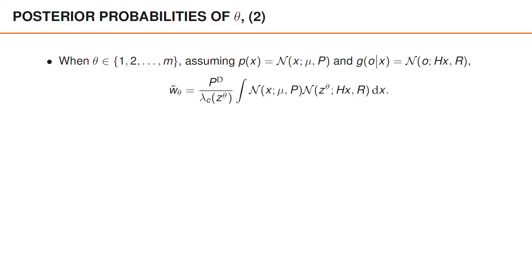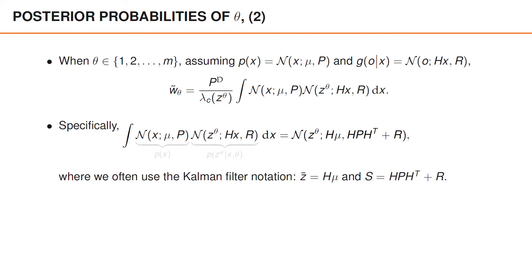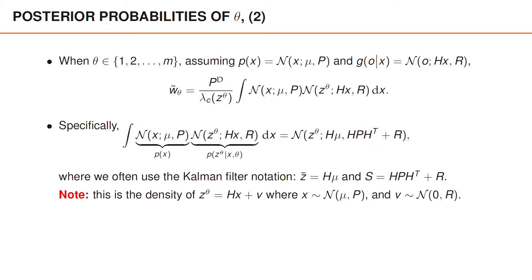This integral is the tricky part, but it actually has a known and simple expression. It turns out that it is identical to a Gaussian density with mean Hmu and covariance HPH-transpose plus R, evaluated at z-data. To remember this result, it is helpful to write down the densities as algebraic equations. If z-data equals Hx plus v, where x is Gaussian with mean mu and covariance P, and v is Gaussian with mean 0 and covariance R, then z-data is Gaussian with mean H times mu and covariance HPH-transpose plus R. All you have to do is realize that the integral on the left-hand side expresses the distribution over z-data under these assumptions.